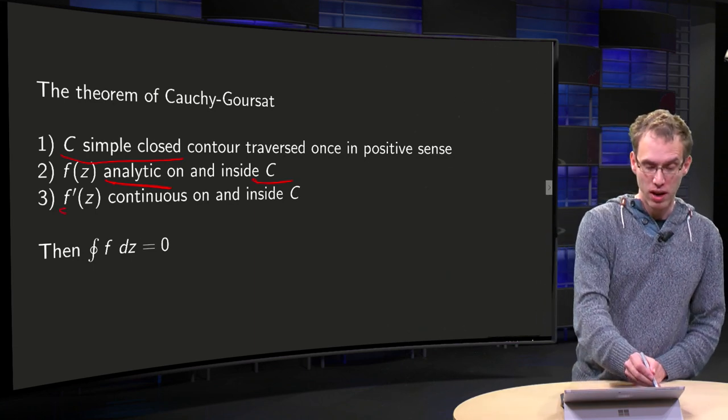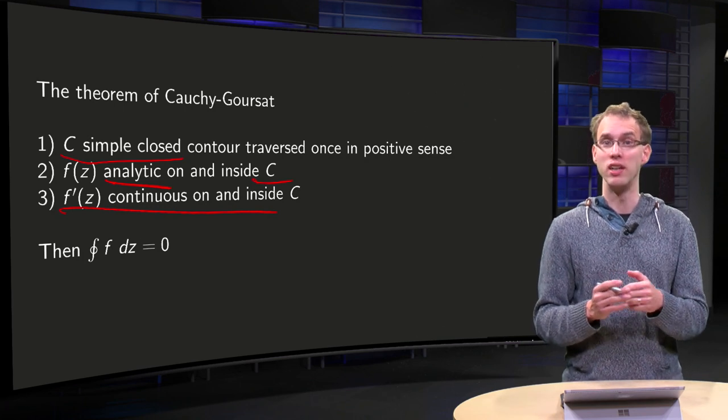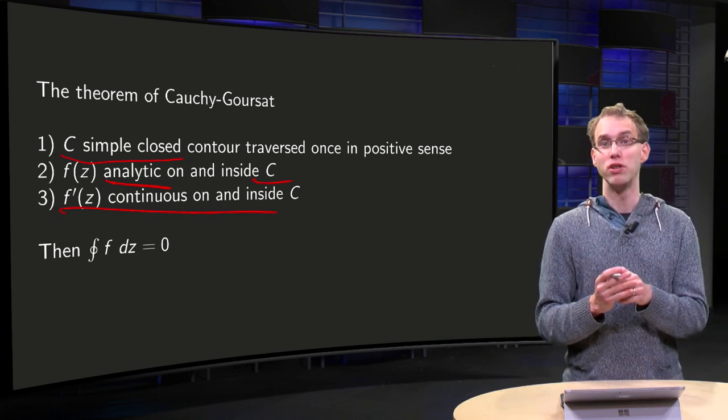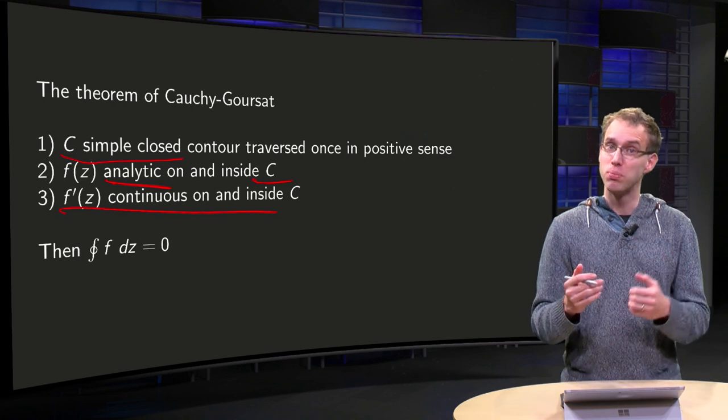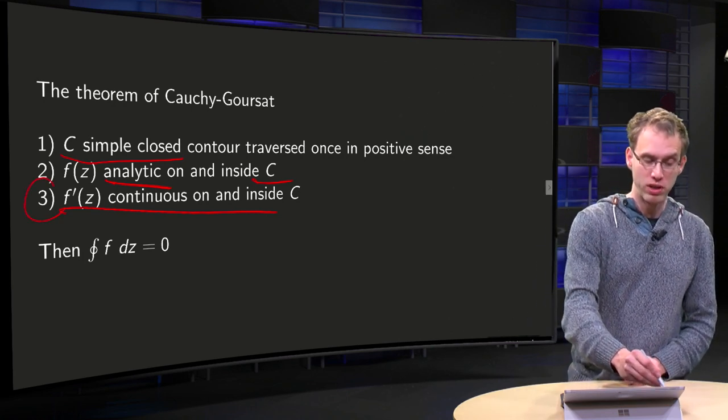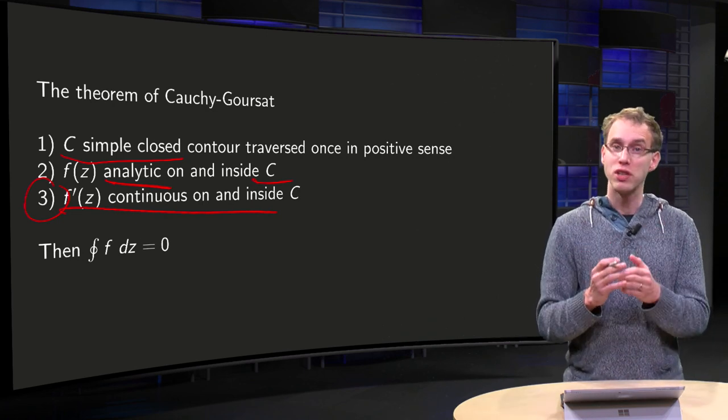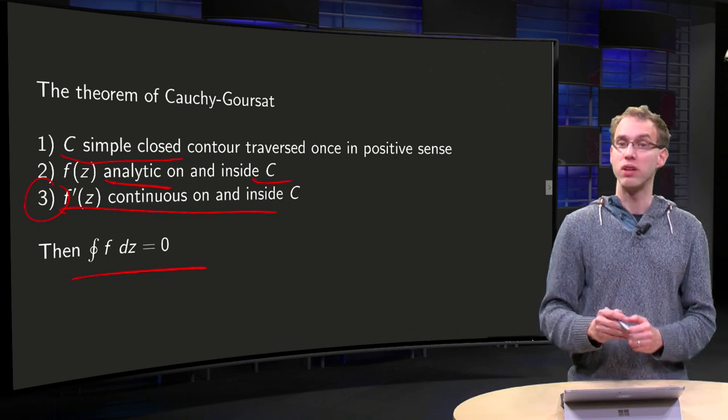And in the Cauchy version, you also assume that F prime of Z is continuous on and inside C. We will prove the Cauchy version, because it's much easier to prove. But remember, you can drop condition 3. Proof is just a bit harder. If you satisfy this, then our integral equals zero.